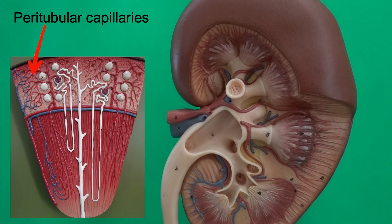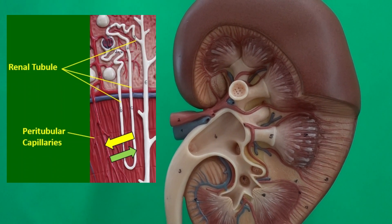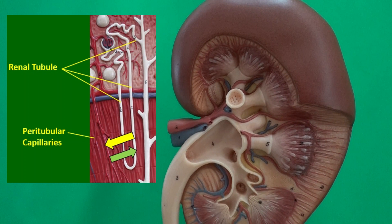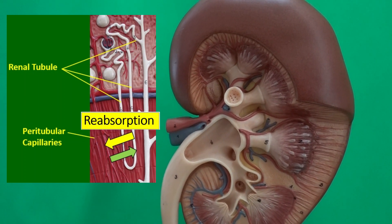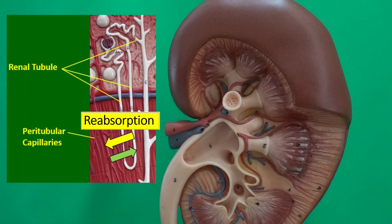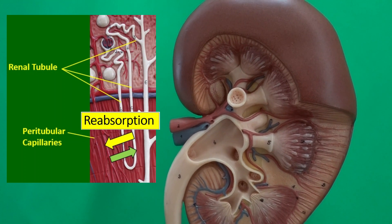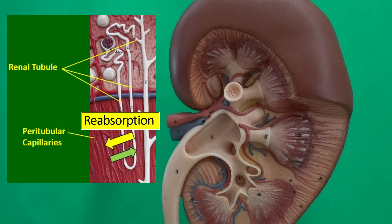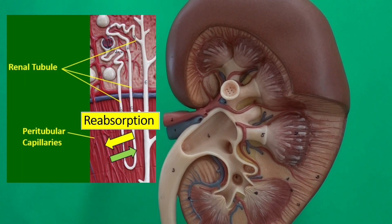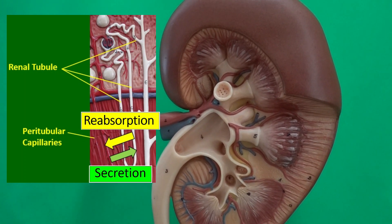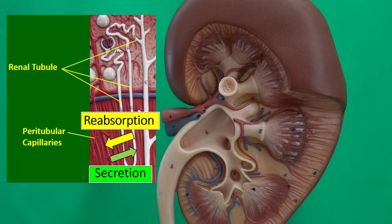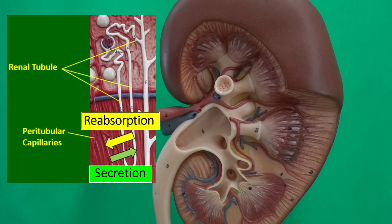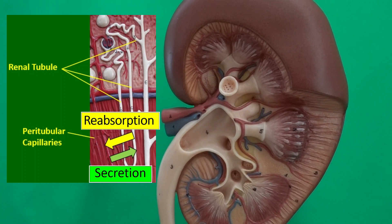Between peritubular capillaries and the renal tubule, we have two physiological processes going on. One would be reabsorption, which means solute and water from the renal tubule go into the peritubular capillary. The other process is called secretion, which means waste and toxic substances from peritubular capillaries move into the renal tubule to eventually be eliminated.